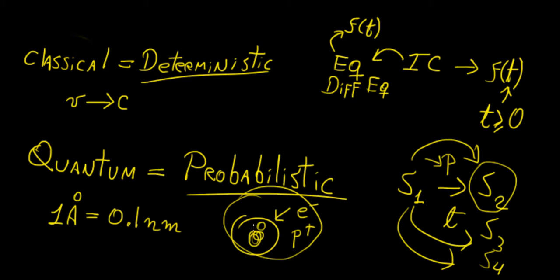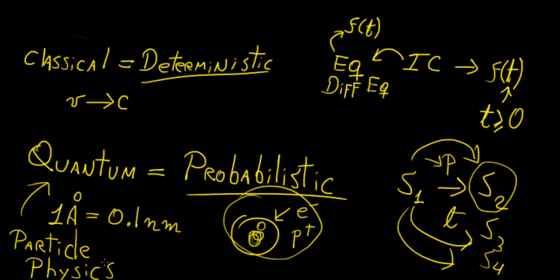Quantum mechanics applies mainly to very small particles and systems of particles. It also explains things like molecular interactions — there is a whole field called quantum chemistry which studies chemistry from the point of view of quantum mechanics. If you ever want to go into particle physics, you need to know quantum mechanics. In fact, I don't think you can get into any modern field of physics without it: quantum field theory, quantum electrodynamics, quantum chromodynamics, semiconductor physics, condensed matter physics, solid state physics, soft matter physics, quantum chemistry — so many fields are related to quantum.